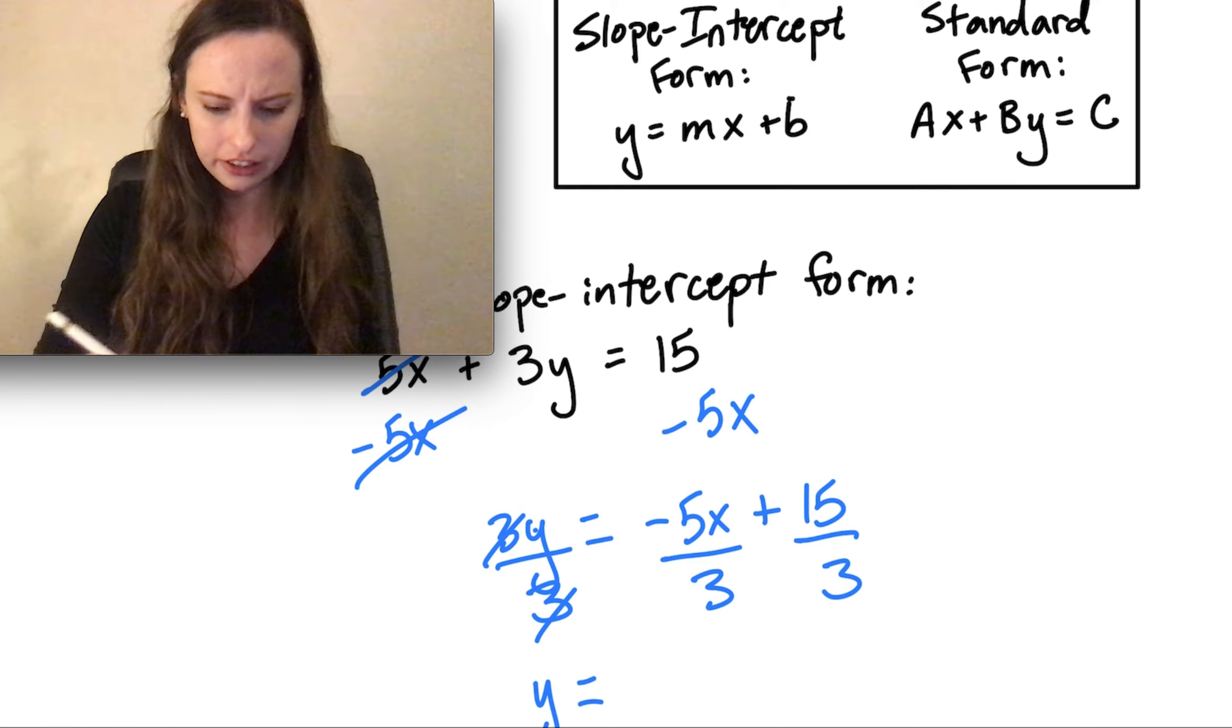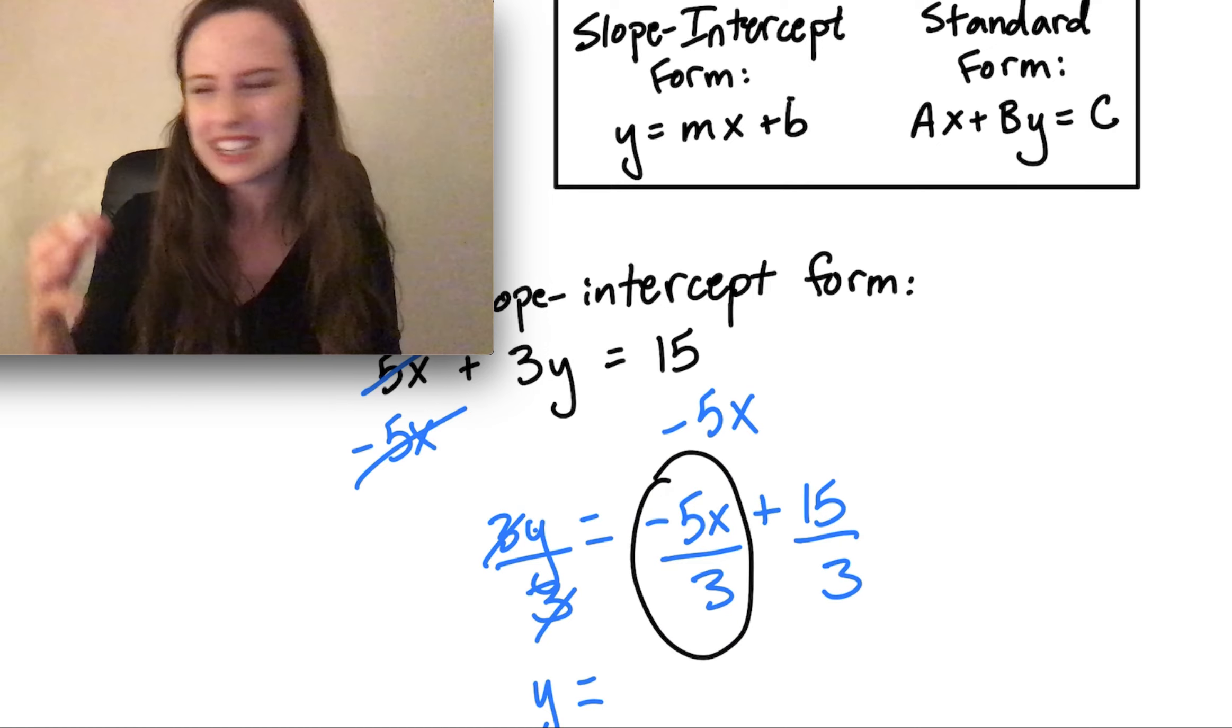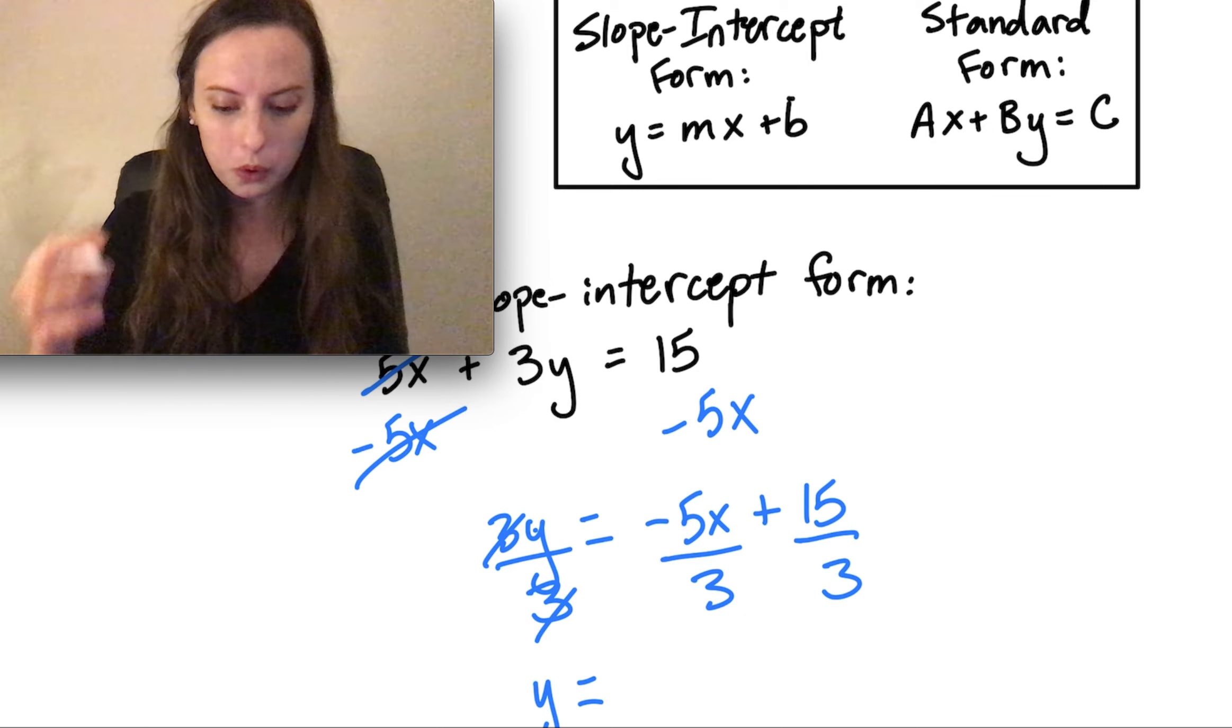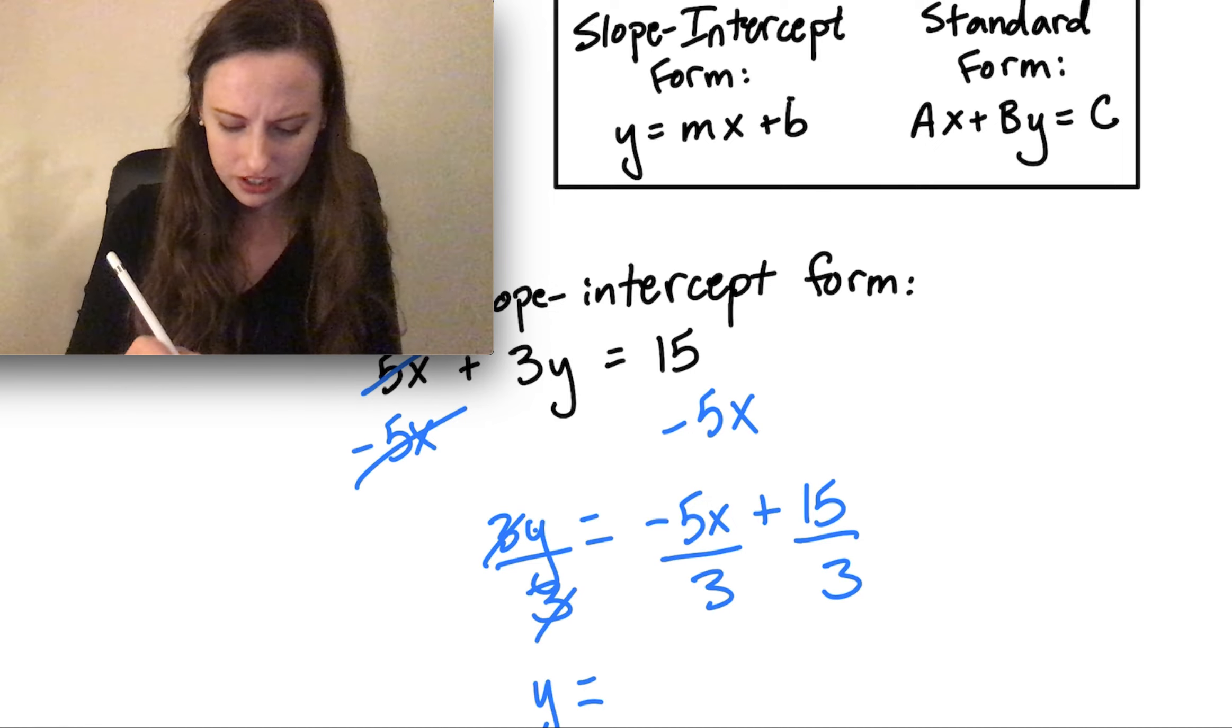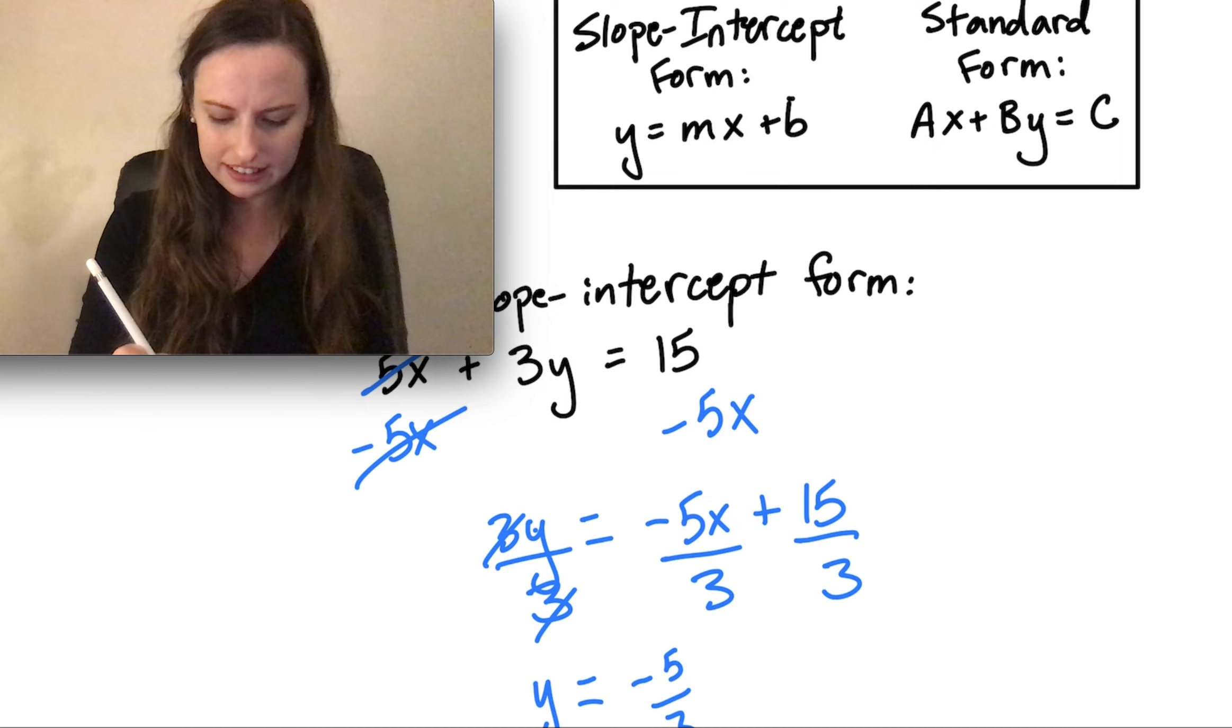Here, we have this fraction, negative 5x over 3. That doesn't simplify like it did in the last problem. So we're just going to write the fraction all together, negative 5 over 3, and then write the x next to it.